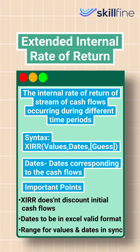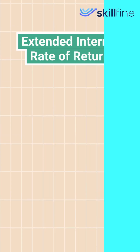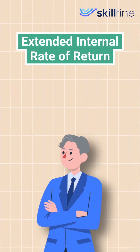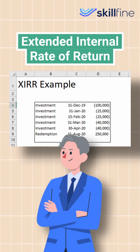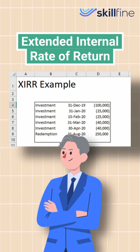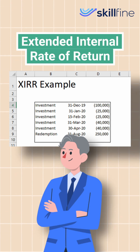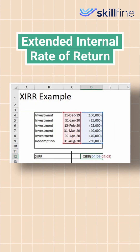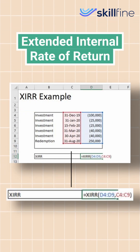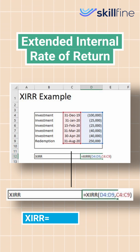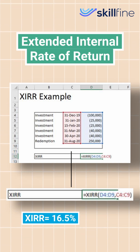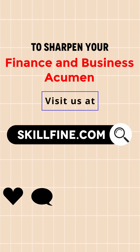Here are some important points to be considered for XIRR. Looking again at the example of Mr. X, this time he wishes to invest in mutual funds at different time periods, and he redeems all his investments on August 31, 2020. By applying this formula, we get the XIRR of 16.5%, which is higher than the average market returns.